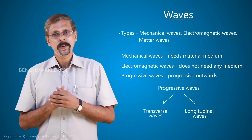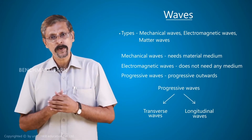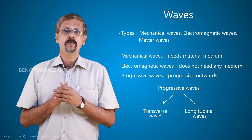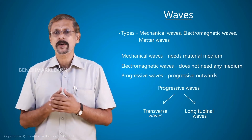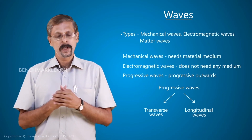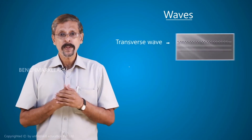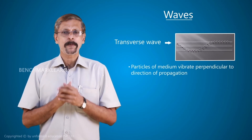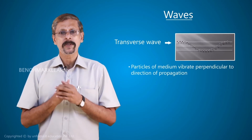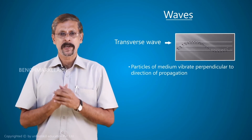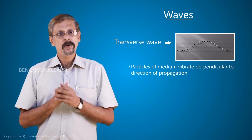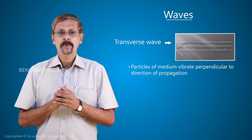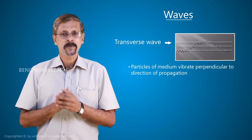Any wave which moves outwards is a progressive wave, and progressive waves are of two types: one is a transverse wave, and the other one is a longitudinal wave. If the particles of the medium are vibrating perpendicular to the direction of propagation, we call such waves transverse waves — for example, light waves.